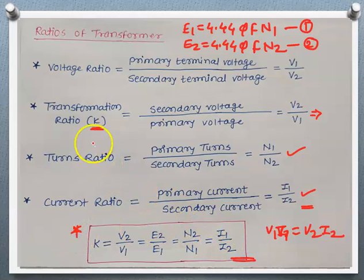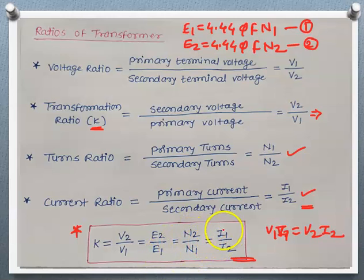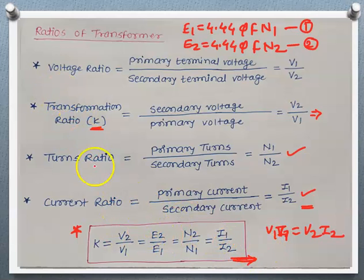The transformation ratio K is defined as: K = V2/V1 = E2/E1 = N2/N1 = I1/I2. This unified expression shows the relation between the different ratios of a transformer and is required to solve numericals based on this concept.